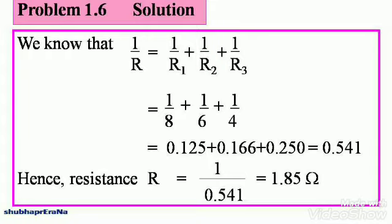So, resistance R is equal to 1 divided by 0.541, which gives you 1.85 ohm. This is the first part of your answer that is the effective resistance of the circuit.